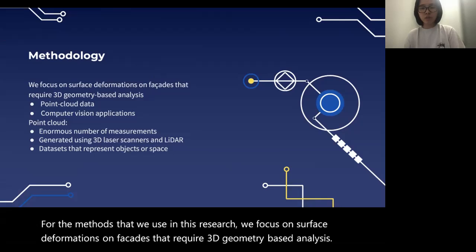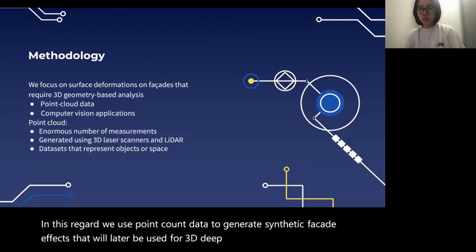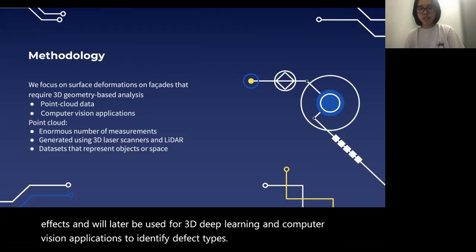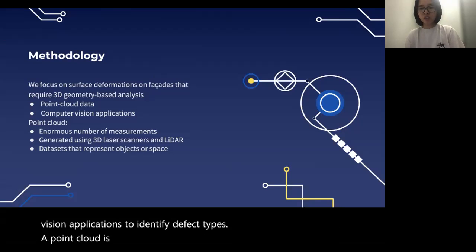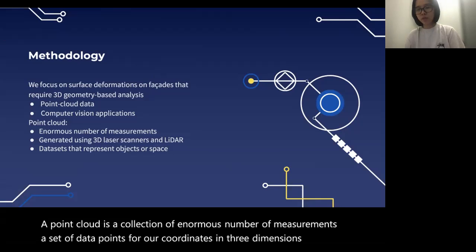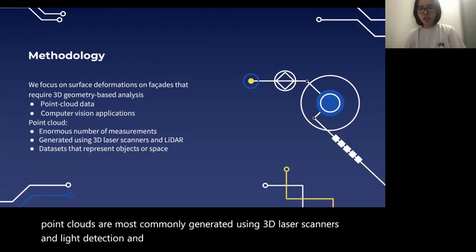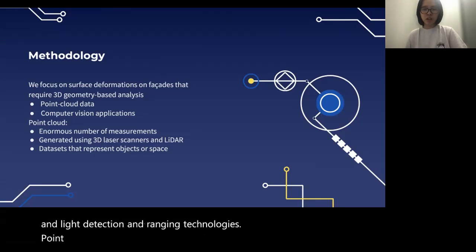In this regard, we use point cloud data to generate synthetic facade defects that will later be used for 3D deep learning and computer vision applications to identify defect types. A point cloud is a collection of an enormous number of measurements — a set of data points or coordinates in three dimensions. Point clouds are most commonly generated using 3D laser scanners and light detection and ranging technologies.